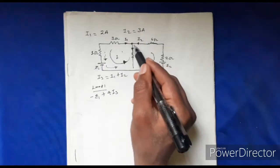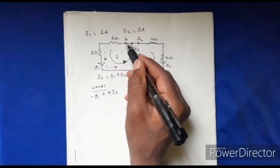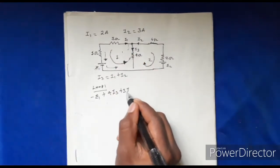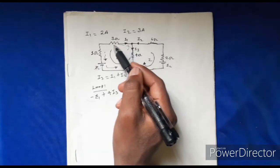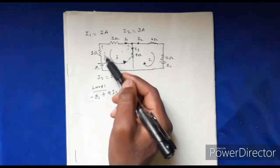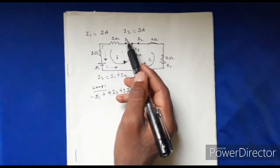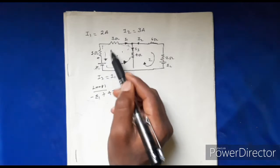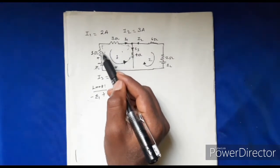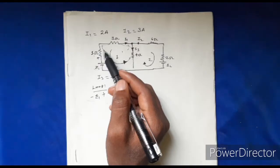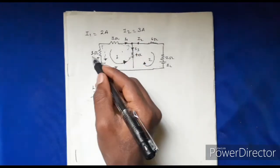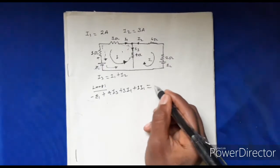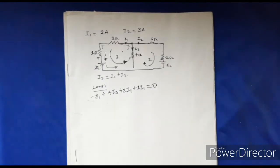This is the current I1. We can apply the current I1 directly. The equation is set equal to 0.